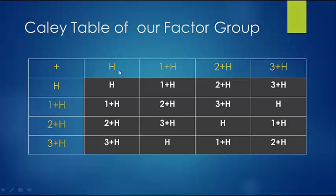Let's look at the Cayley table of our factor group. We operate the cosets together, and H acts as the identity element. When we add (1+H) and (1+H), we get (2+H). Also, (2+H) + (2+H) equals H because we're working mod 4 — it loops around. We showed that 4 + H equals H, confirming H is the identity.